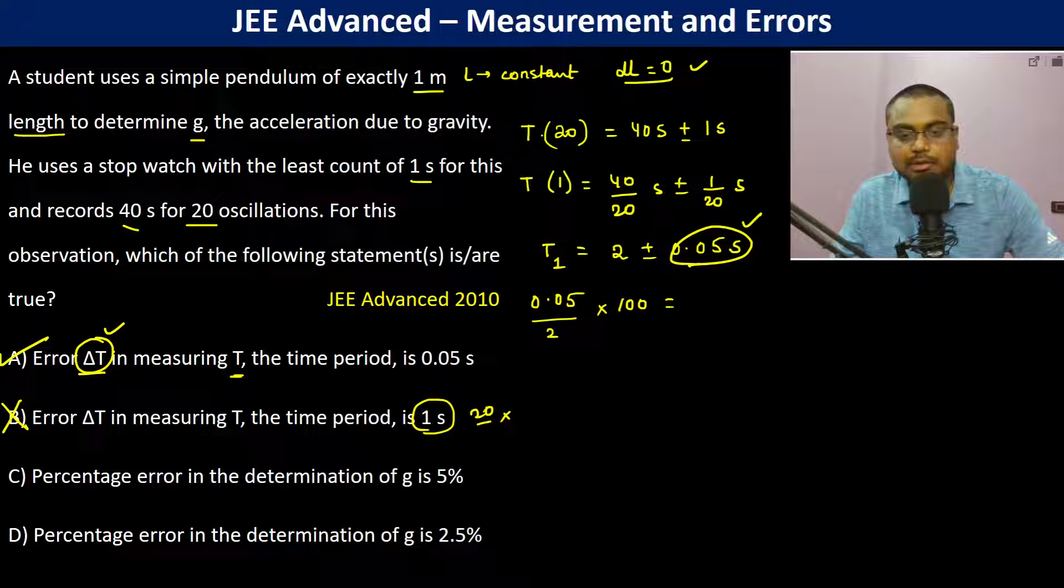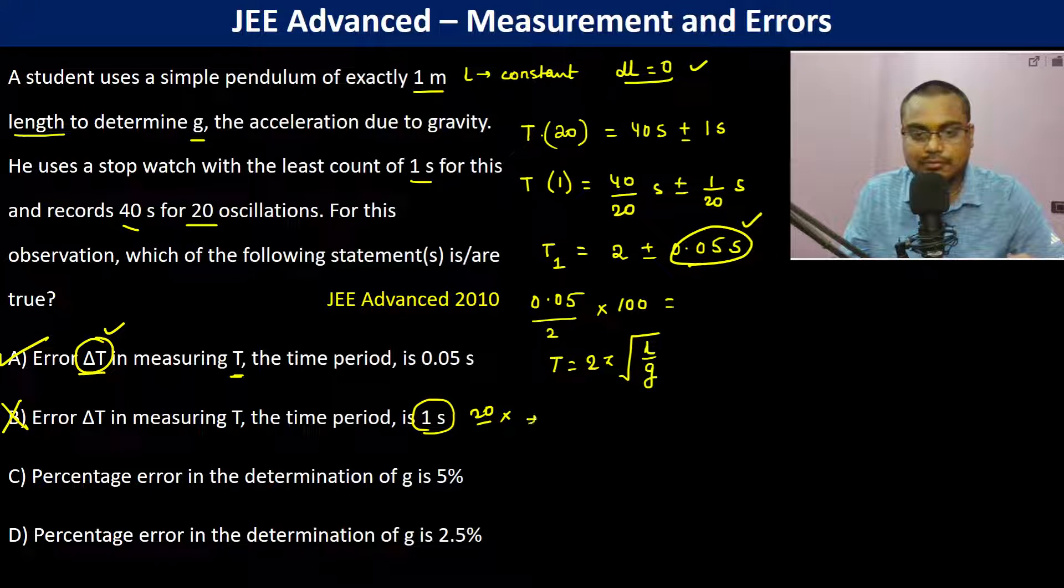Percentage error in the determination of g is... The time period is 2π√(L/g). Therefore, g becomes 4π²L divided by T².